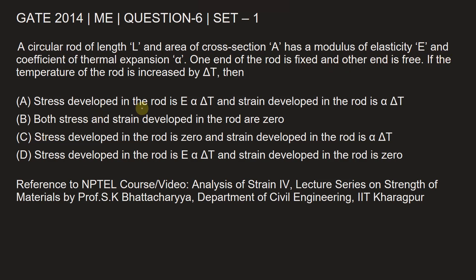If the temperature of the rod is increased by delta T, then option A: stress developed in the rod is E alpha delta T, that is E times alpha times delta T, and strain developed in the rod is alpha into delta T. Option B is both stress and strain developed in the rod are zero.